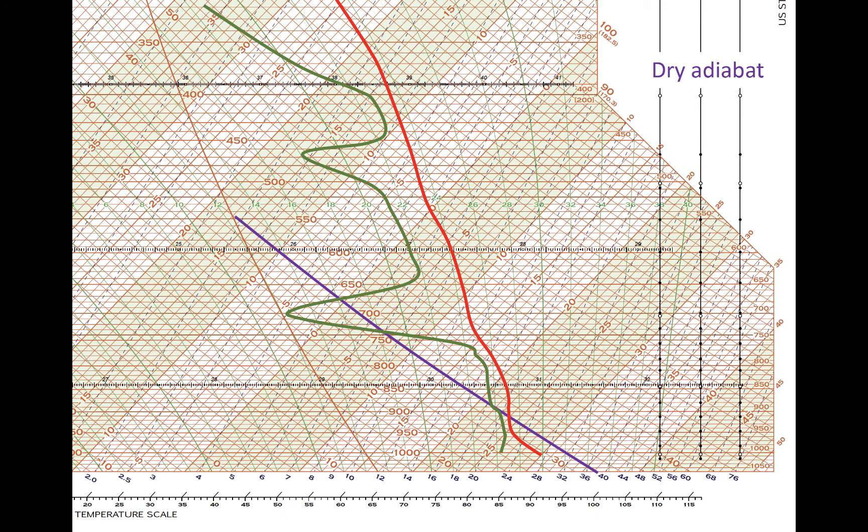Dry adiabats, or lines of constant potential temperature, are highlighted here. Potential temperature is defined as the temperature that a parcel would have if it descended adiabatically to 1000 millibars. Therefore, dry adiabats and isotherms with the same value intersect at 1000 millibars. In this example, the potential temperature at 910 millibars is about 32 degrees Celsius, or 305 K.